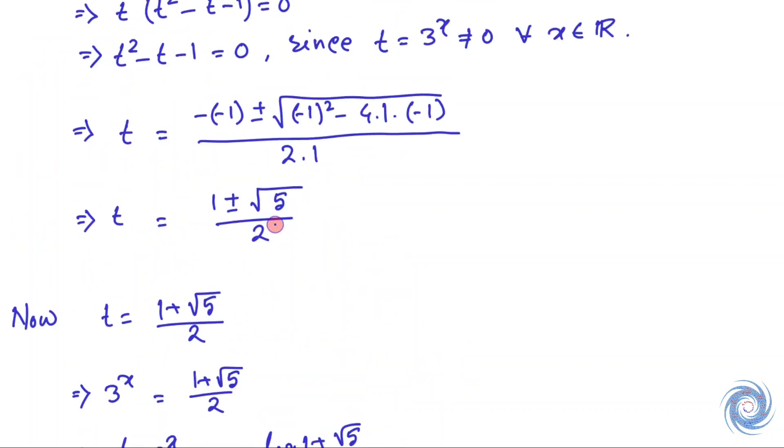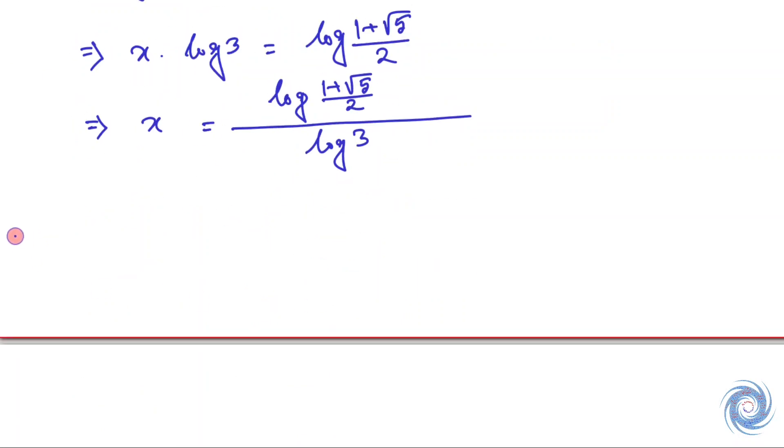Now we will take t equals one minus square root of 5 divided by 2. By replacing t by 3 to the power x, we have 3 to the power x equals one minus square root of 5 over 2. But we know that for any values of x, 3 to the power x is always positive. Therefore, this equation has no solution.